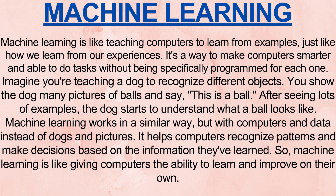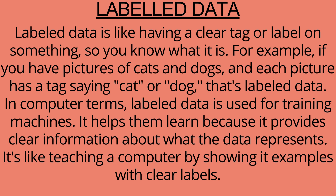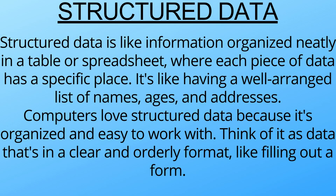What is machine learning? Machine learning is like teaching computers to learn from examples, just like how we learn from our experiences. It's a way to make computers smarter and able to do tasks without being specifically programmed for each one. Imagine you're teaching a dog to recognize different objects. You show the dog many pictures of balls and say, 'this is a ball.' After seeing lots of examples, the dog starts to understand what a ball looks like. Machine learning works in a similar way, but with computers and data instead of dogs and pictures. It helps computers recognize patterns and make decisions based on the information they've learned.